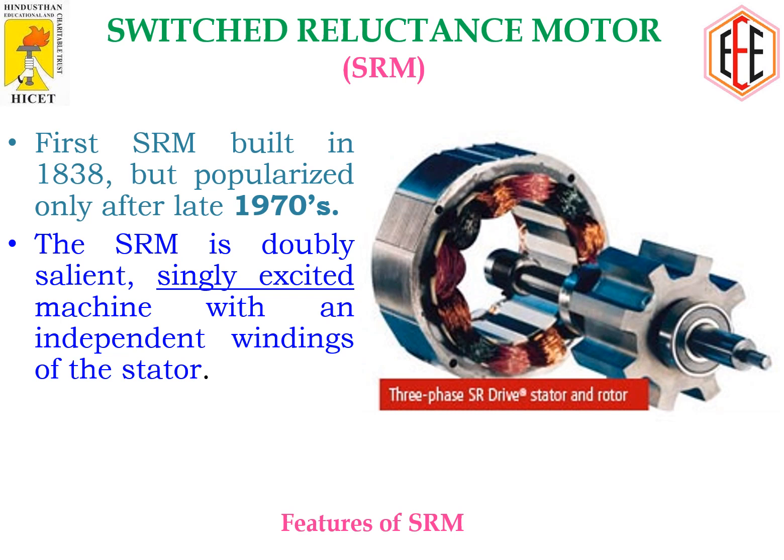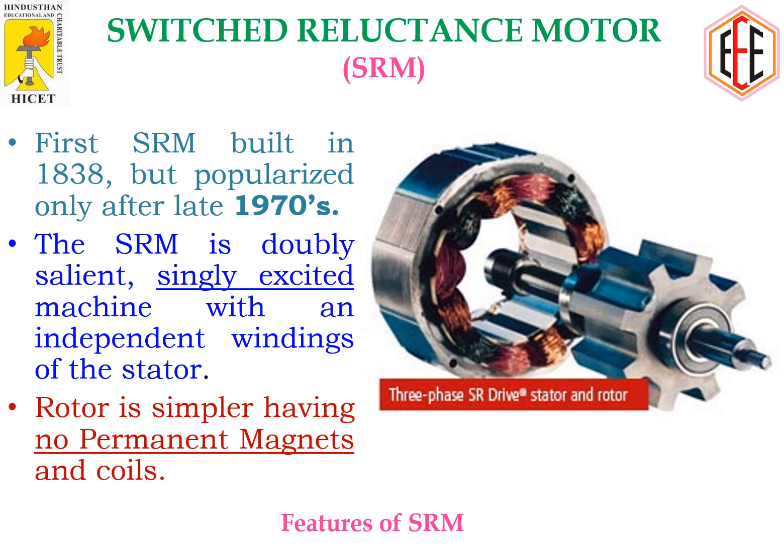According to its construction, the SRM is doubly salient and singly excited. That means the stator only has coils and the rotor has only steel laminations. The coils have independent windings on the stator, and the rotor is simpler because there are no windings or permanent magnets on it.